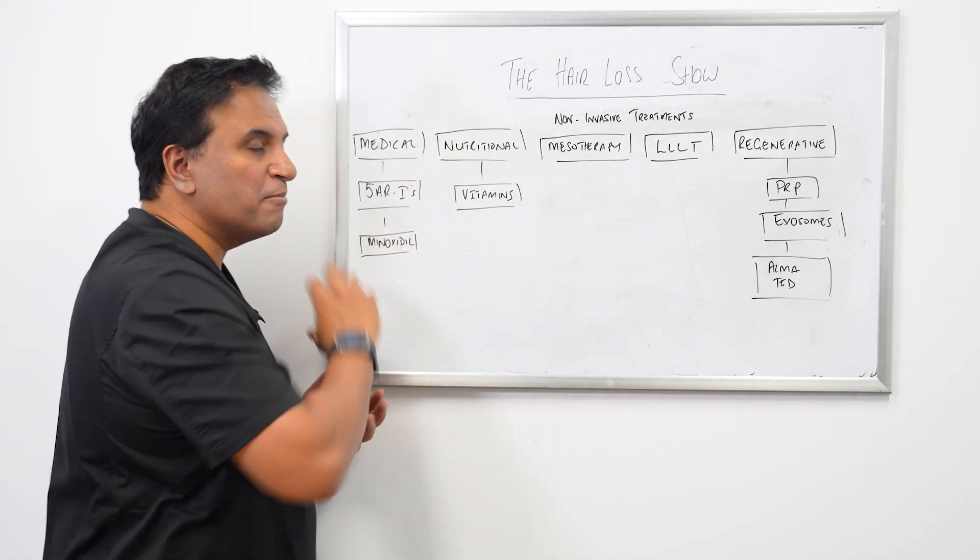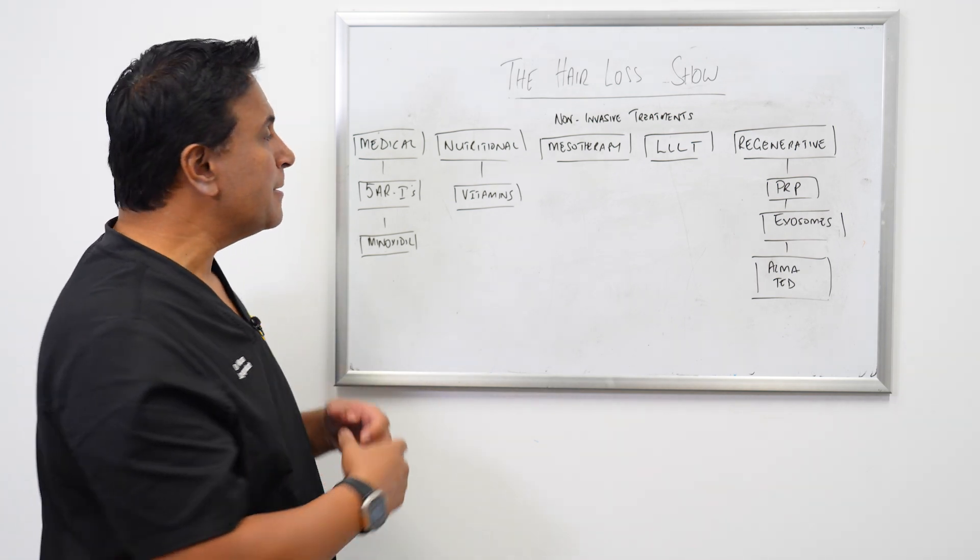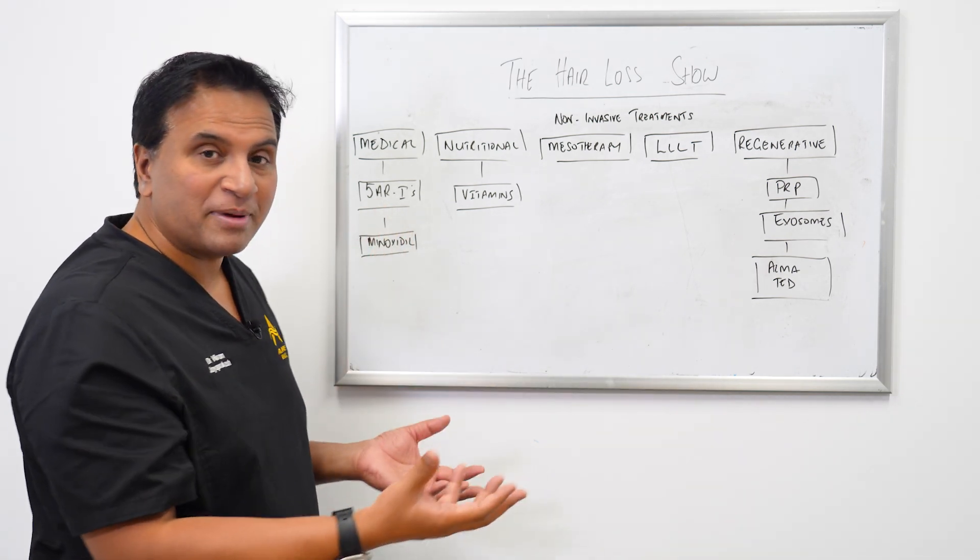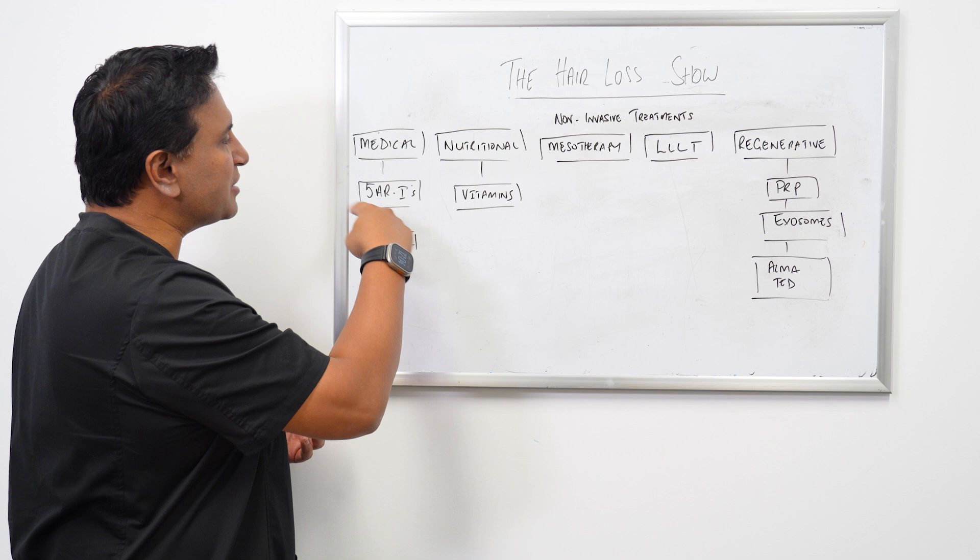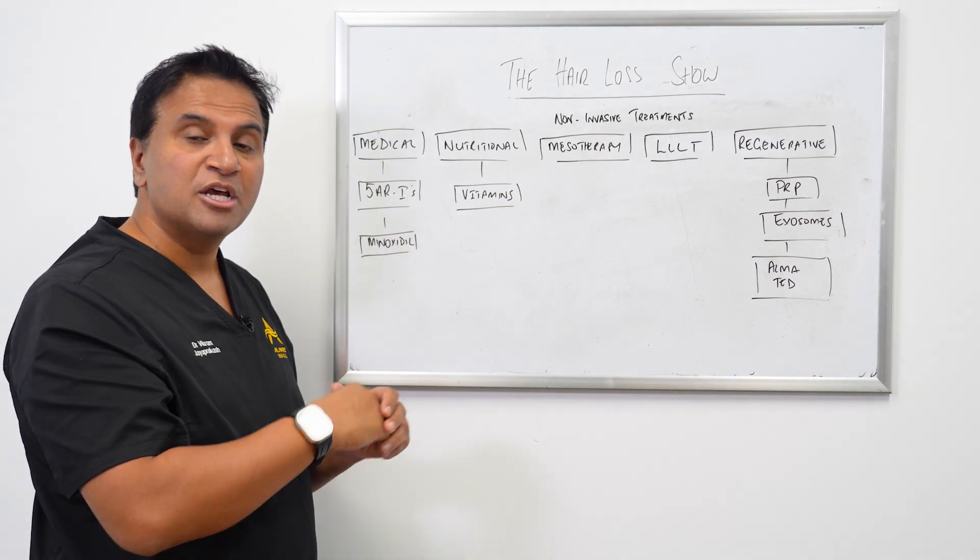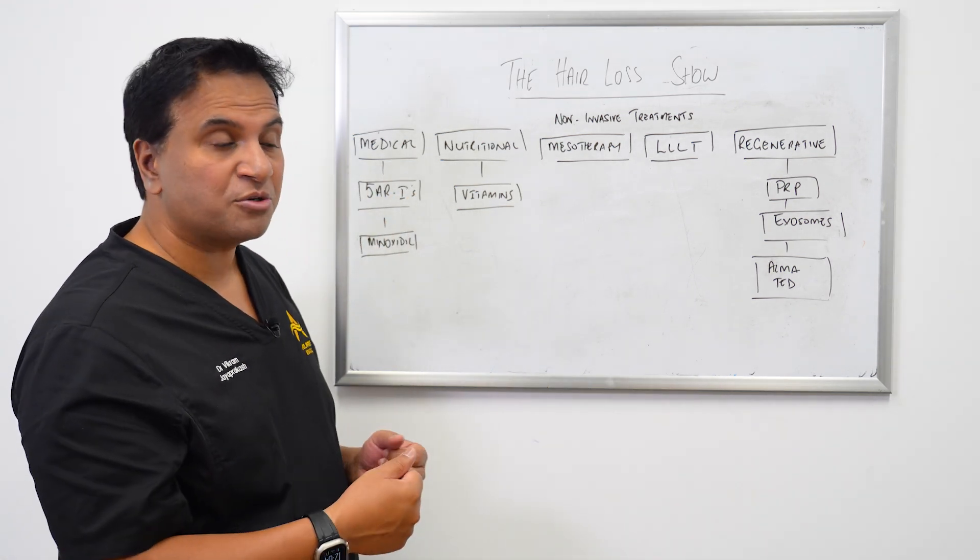The first one being the most common thing that we use is medical therapies. We've talked a lot about those in the past and they really encapsulate things like the 5-alpha reductase inhibitors, so finasteride or dutasteride, both the oral version or the topical version.